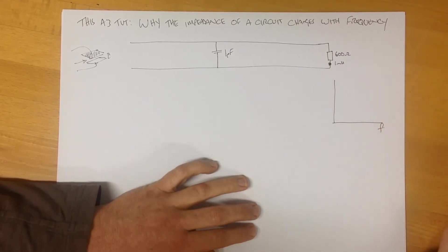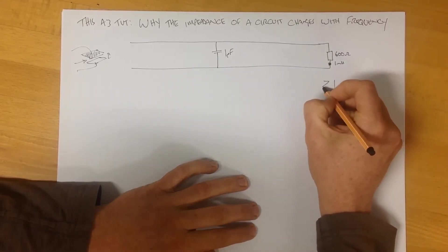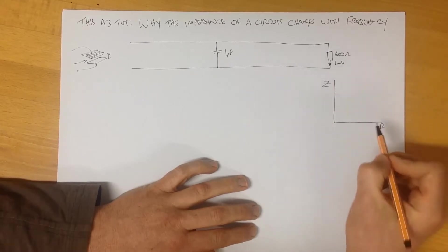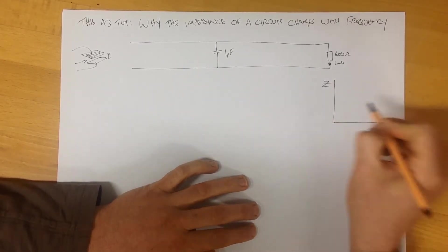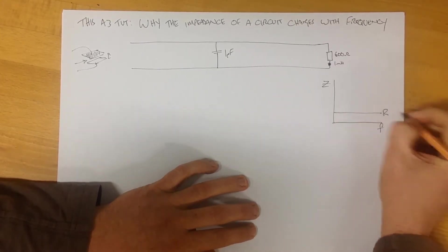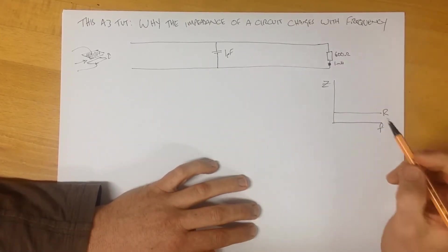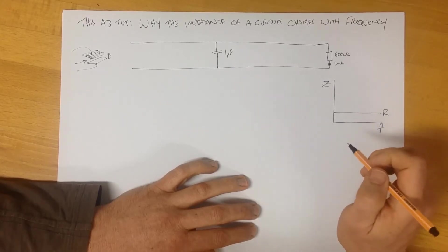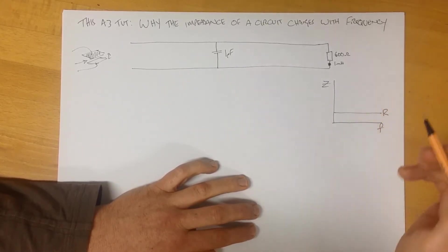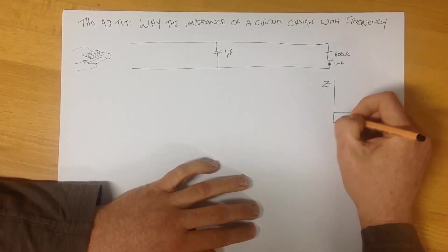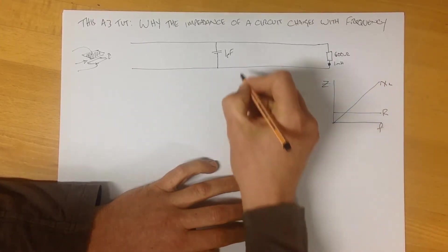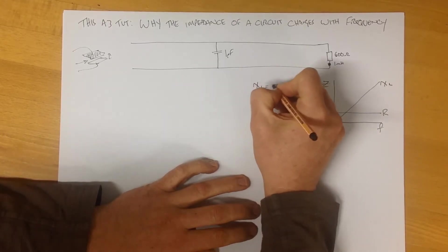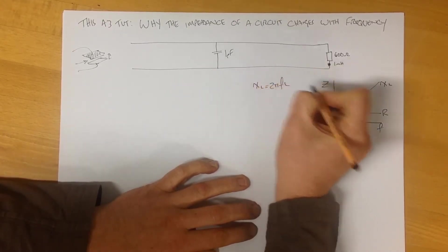So coming back to the subject now, why does this impedance of this circuit change with different frequencies? And it all comes down to a very simple plot which, if you keep in mind, will stand you in good stead. On this axis we have frequency, on this axis we have impedance. Now, the resistance does not change with frequency. It is a constant. Whatever it is, it's a constant.